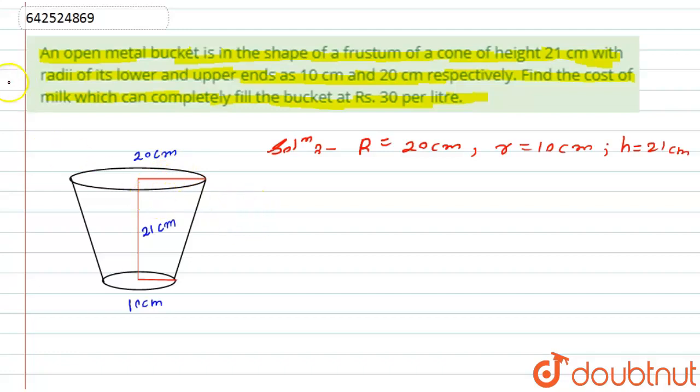So let's start with this. Volume of frustum of cone, that is V, is equals to 1 by 3 pi h in bracket capital R square plus small r square plus capital R into small r.